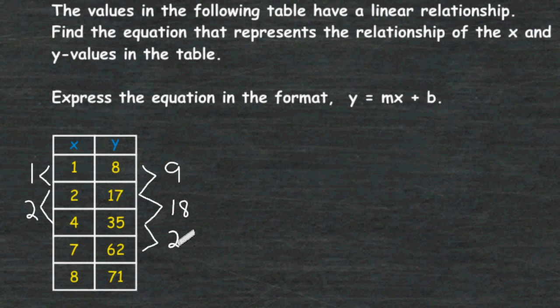From 35 to 62 is an increase of 27, and the increase from 4 to 7 for the x values is 3. From 62 to 71 is an increase of 9, and the increase from 7 to 8 is an increase of 1.